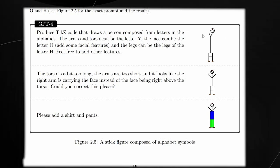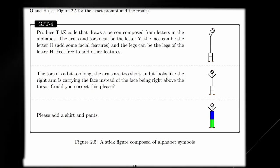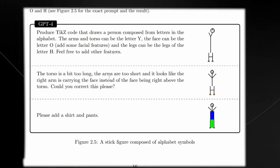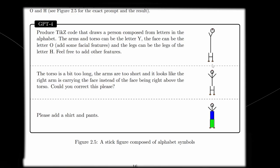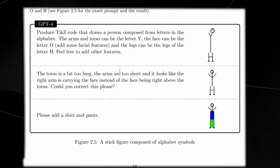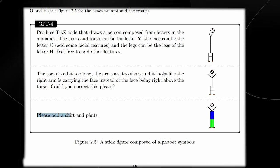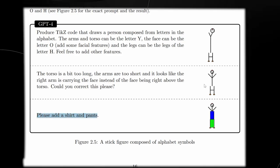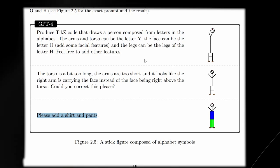There are three examples here. You can see that GPT-4 is able to make a person composed from letters in the alphabet, which is truly an outstanding task. Not only can it make these images, it can then manipulate these images too. It said the torso is a bit too long, the arms are too short, and it looks like the right arm is carrying the face. It manages to change this in a very swift manner. Then you've asked it to please add a shirt and pants, and it's actually managed to add a shirt and pants, which is definitely mind-blowing.